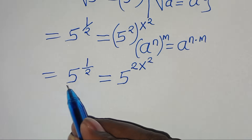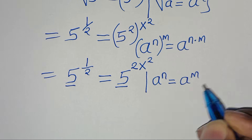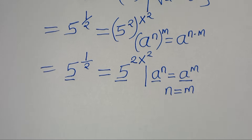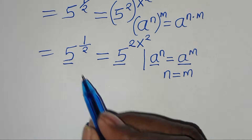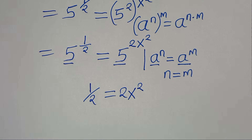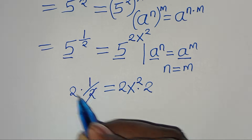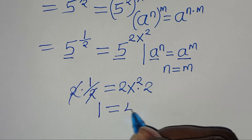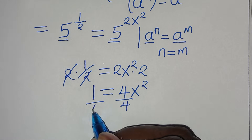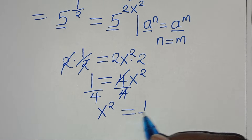Now we note that the bases are common — since a to the power of n equals a to the power of m implies n equals m. So we have one half equals 2x squared. Multiplying both sides by 2, we get 1 equals 4x squared. Dividing both sides by 4, this implies that x squared equals 1 over 4.